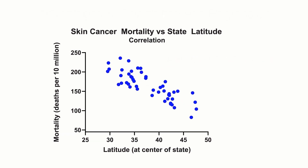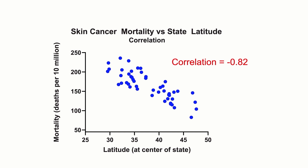Let's look at a real-world example where we use both correlation and regression. The strength of UV rays varies by latitude — the higher the latitude, the less exposure to sun, so where you live can have an impact on your skin cancer risk. The correlation between latitude and mortality rate is negative 0.82, indicating a strong negative relationship between the two variables.